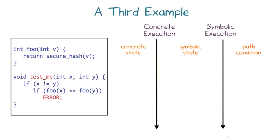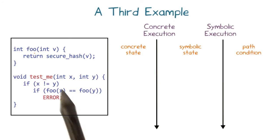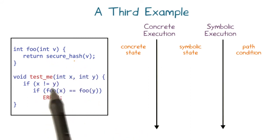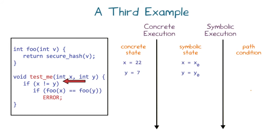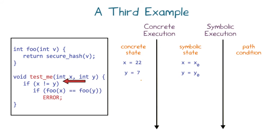Let's look at one more example showing how DSE differs from pure symbolic execution. The foo function still returns a secure hash of its input. The testme function operates as follows: if inputs x and y are different, then if foo of x equals foo of y, the program throws an error; if either condition is false, the program terminates without error. DSE starts with x equals 22 and y equals 7, with symbolic state x equals x0 and y equals y0.